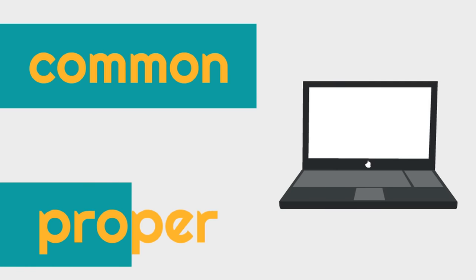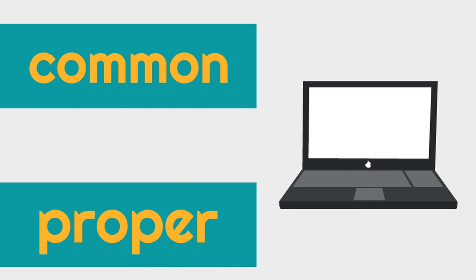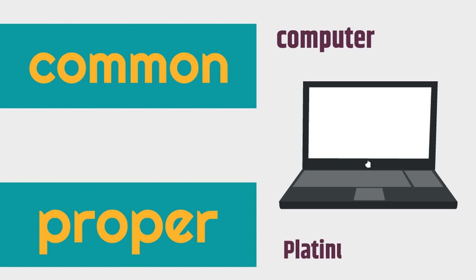Let's try this one. What is this? What would be the common noun? Computer. Computer would be the common noun. Now, let's say this specific computer is a Platinum 10. That means the proper noun for this would be Platinum 10. The common noun is the type of person, place, or thing, which is a computer. And the proper noun is the specific one, which is the Platinum 10.